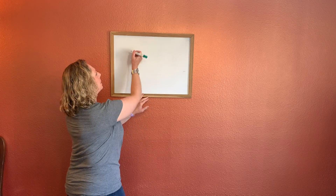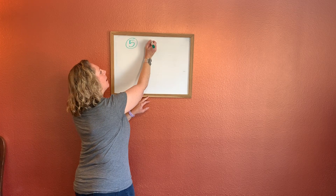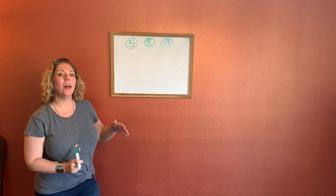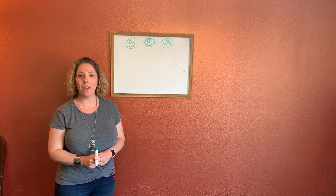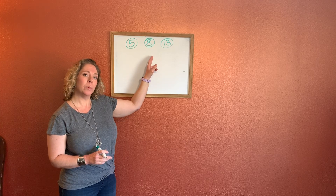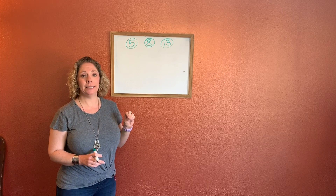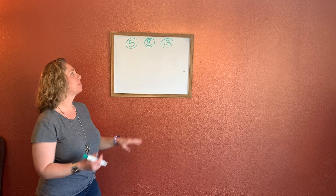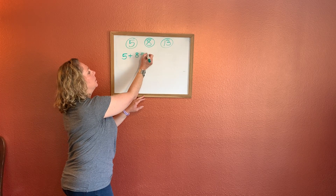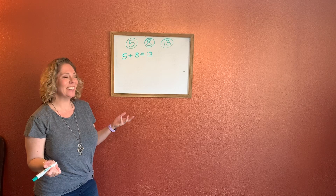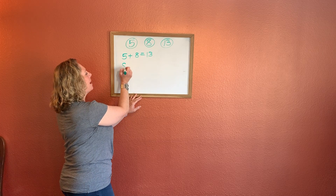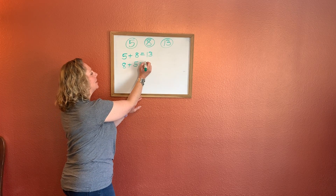So let's start with this fact family: 5, 8, and 13. What are the number sentences we would write for this fact family? Let's start with our addition sentences. Remember, with our addition sentences, our two numbers of least value are our add-ins and the number with the greatest value becomes our sum. So we can start just the way it's written: 5 plus 8 equals 13. You guys are so smart — the next addition sentence in our fact family is going to be 8 plus 5 equals 13.